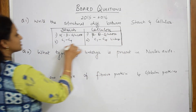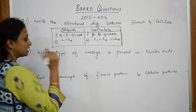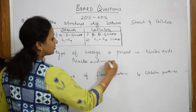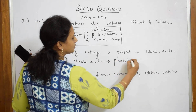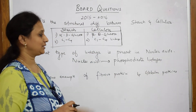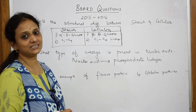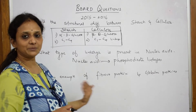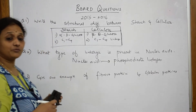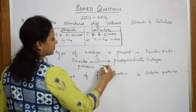Next, they've asked what type of linkage is present in nucleic acids. In nucleic acids, the bond formed is phosphodiester linkages. For a one-mark question, you can write the name and leave it — phosphodiester linkages, 5-prime to 3-prime linkage. You can also include the structure if time permits.